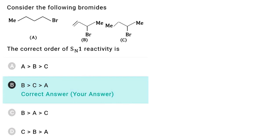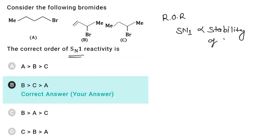In this question we have to find the correct order of reactivity for SN1 reaction. The rate of SN1 reaction depends on stability of carbocation. During SN1 reaction a carbocation is formed, and the rate of reaction depends on its stability. Higher is the stability of carbocation, higher is the rate of reaction. Now compare the carbocations formed from these molecules.